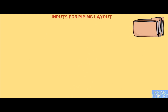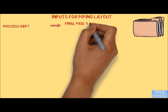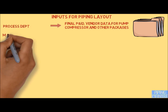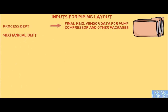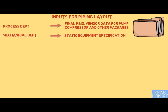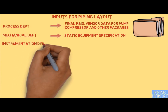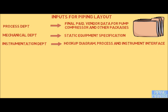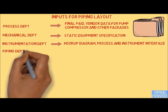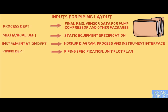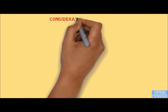The final piping plan can be issued for construction. For preparing this piping layout we need inputs from other disciplines: from the process group we need final P&ID; from the mechanical department we need vendor data for pumps, compressors, and other packages, and static equipment specifications for vessels and tanks; from instrumentation and control systems we need hookup diagrams and process-instrument interfaces; and from the piping department we need piping specifications and the unit plot plan.